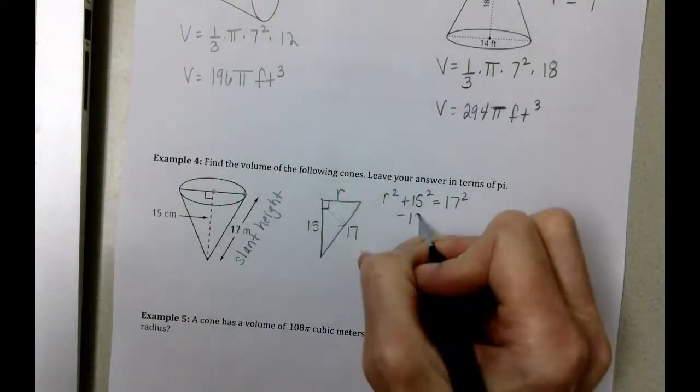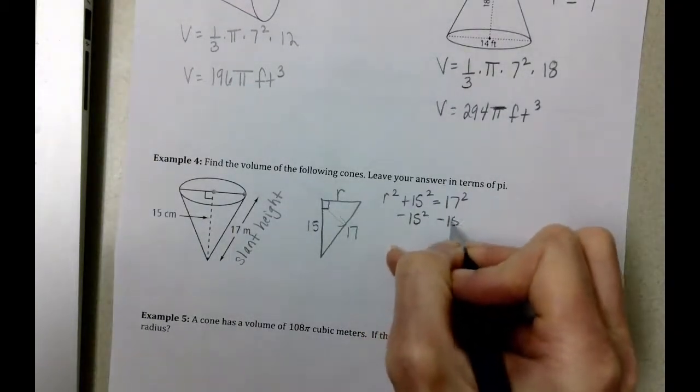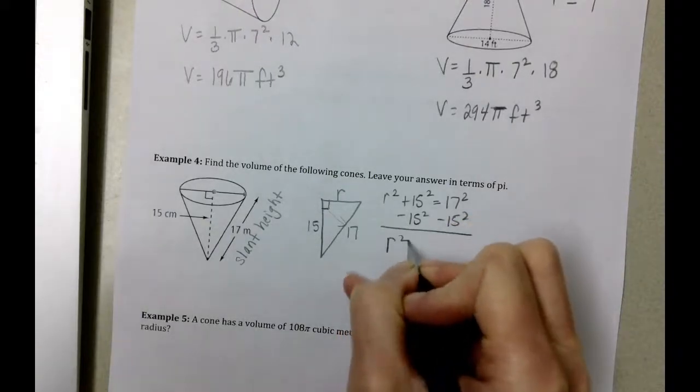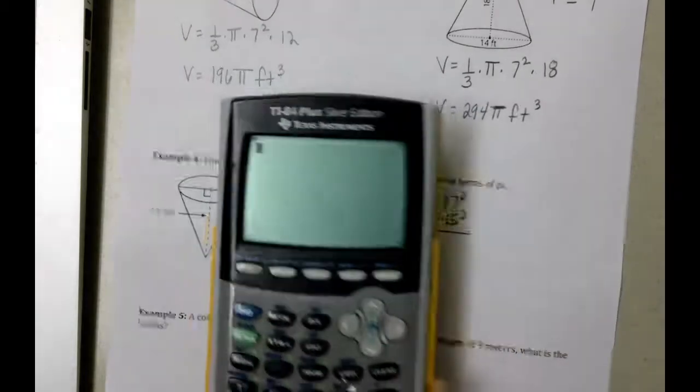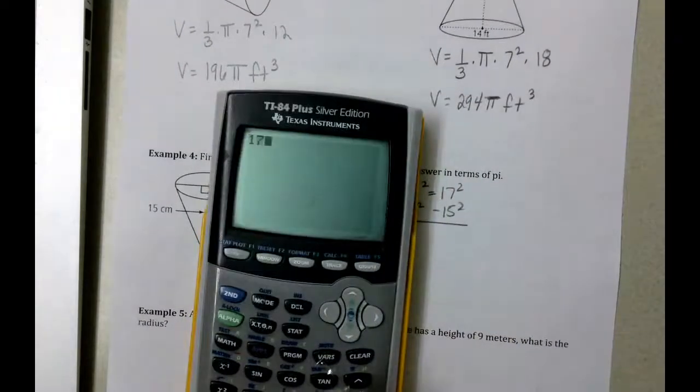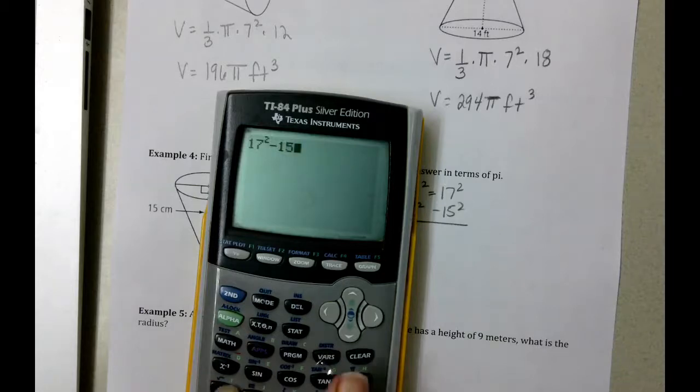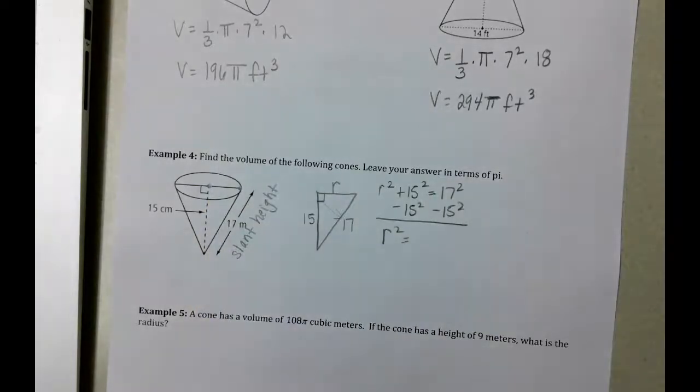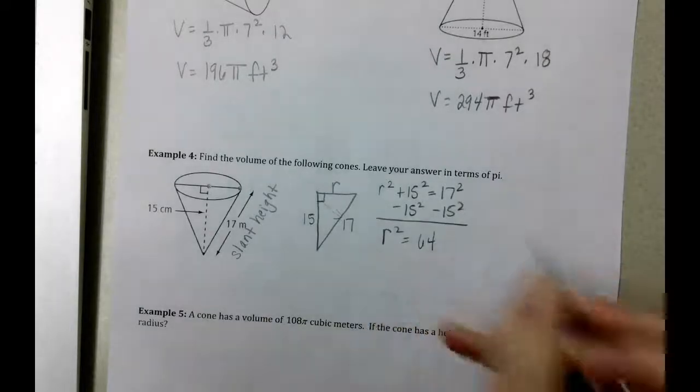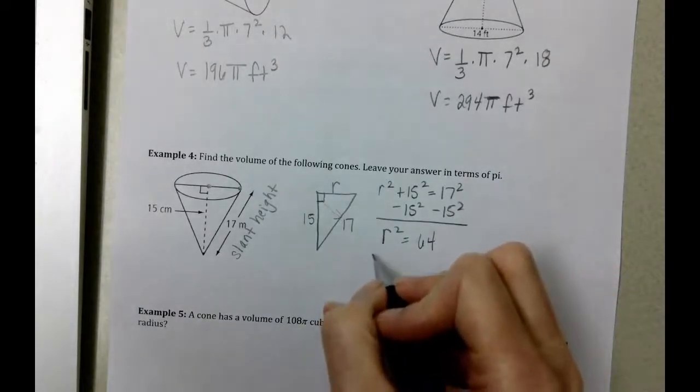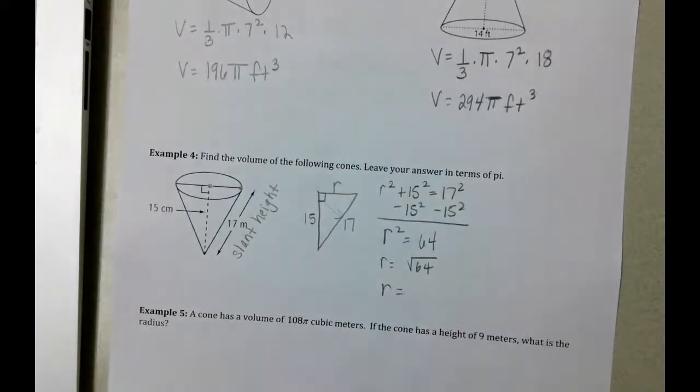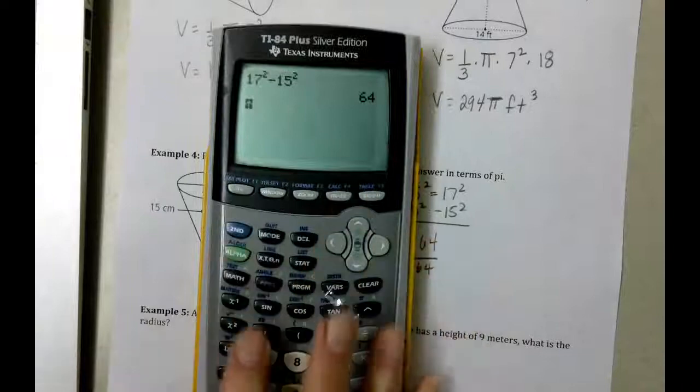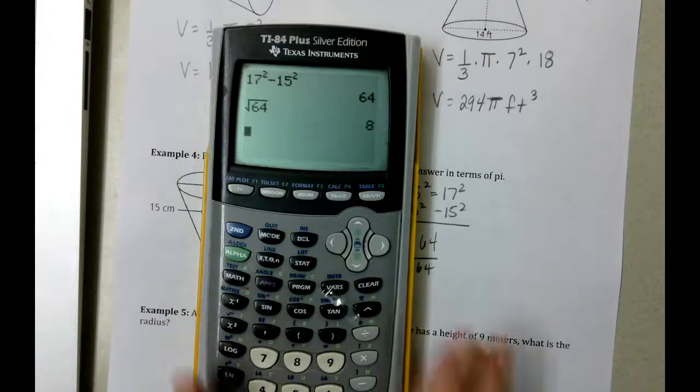When we solve this, we get r squared equals, then if we do 17 squared minus 15 squared, exactly what you would type into desmos, we get 64. Then what we need to do is take the square root of 64 to get our radius value, and the square root of 64 is 8.